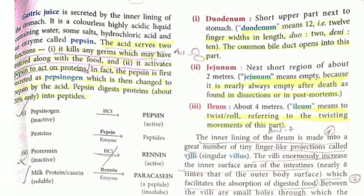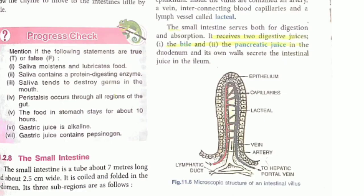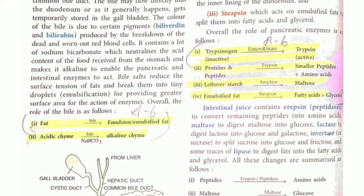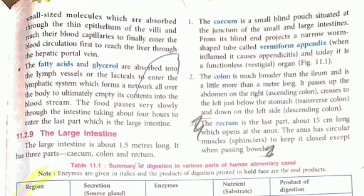For the small intestine, learn the different regions and the structure-based question of the intestinal villus. Villi is very important. Also learn the reactions and the significance of pancreatic juice from this table particularly.